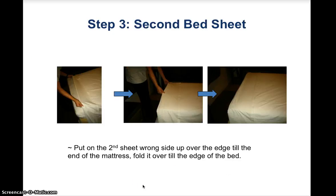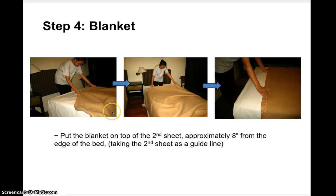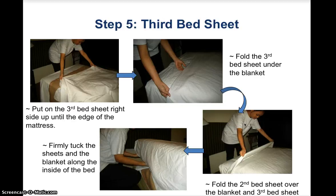For the second bedsheet, spread it wrong side up over the edge until the end of the mattress, then fold it over to the edge of the bed. For the blanket, spread it and pull it until it meets the edge of the second bedsheet. For the third bedsheet, spread it right side up on top of the blanket, pulling a few inches above the blanket line and folding the extra inches under the blanket.